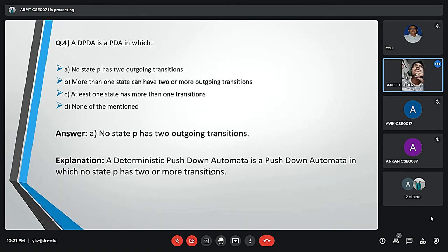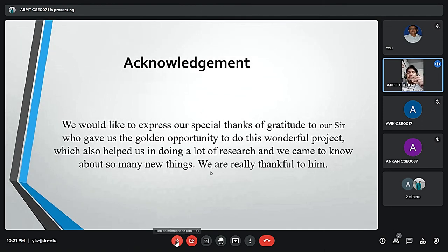Question four: DPDA is a PDA in which: A) no state p has two outgoing transitions, B) more than one state can have two or more, C) at least one state has more than one transition. Our answer is A: no state p has two outgoing transitions. The explanation is a deterministic PDA is a PDA in which no state p has two or more transitions. That's the end of our PPT. I would like to thank you sir for giving us this opportunity to present.